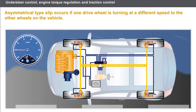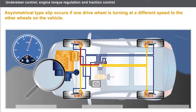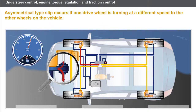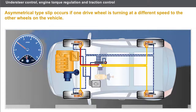Asymmetrical type slip occurs if one drive wheel is turning at a different speed to the other wheels on the vehicle. This situation occurs, for example, when one wheel is on tarmac and the other wheel is on ice. The computer for the electronic stability program controls the braking for the wheel that is slipping. The excess torque is transferred, via the differential, to the wheel with the best grip. At the same time, the computer reduces the engine torque if the braking action proves to be insufficient.